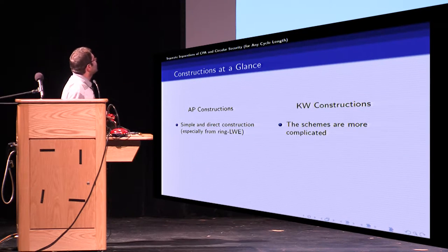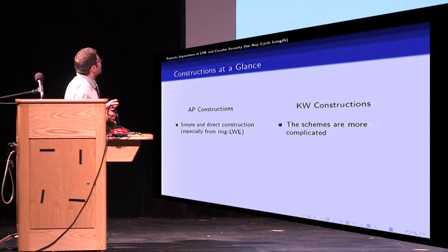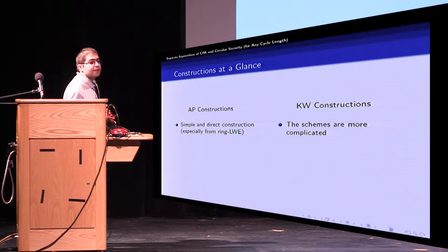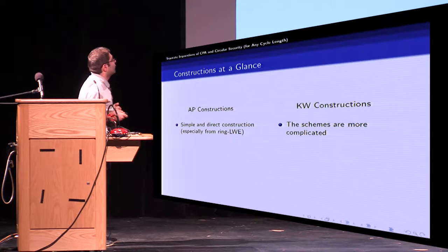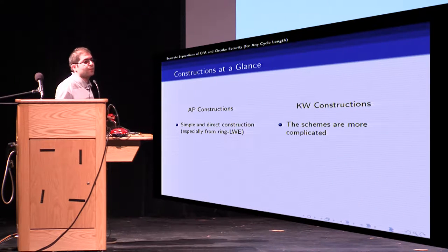Here we see features of both constructions at a glance. Alamati Peikert constructions which we also call AP constructions are somewhat simple and direct especially in ring setting. We will see it soon whereas KW constructions are more complicated. However it comes with some benefits.